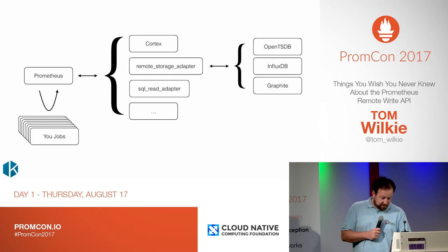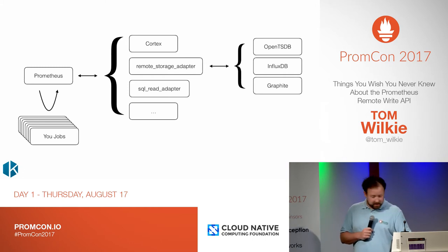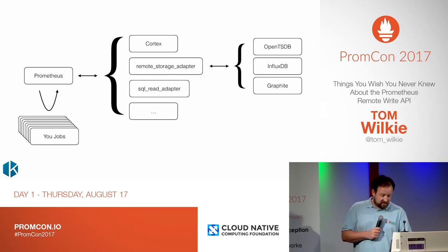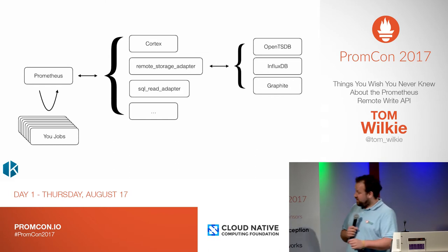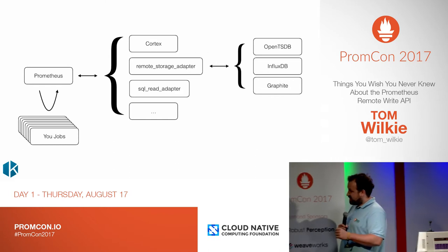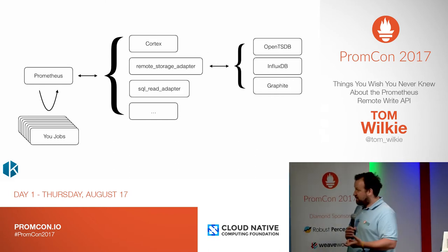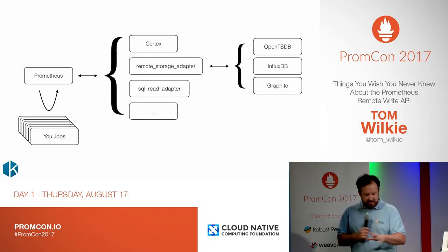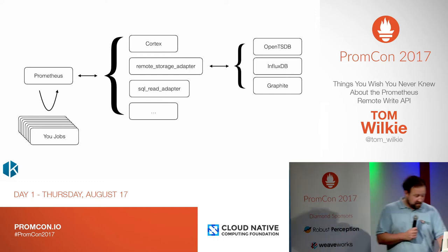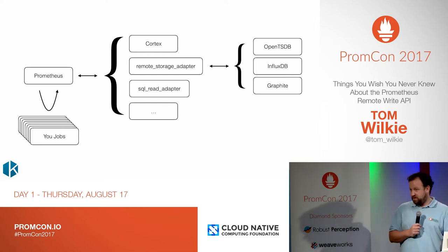I'll mainly be focusing on the Write Path because it's more complicated than the Read Path. The keynote here is that we send samples as protobuf-encoded and then snappy-compressed inside the body of an HTTP message. So first, why did we do that?